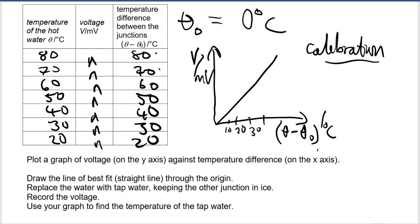You go horizontally until you meet the graph, you go down there, the graph will give you a temperature difference, theta minus theta naught. In this case, our theta naught was 0 degrees Celsius, which means this corresponds also to the temperature of the water. That's how you use your graph as the calibration curve. That's how you obtain values of temperature using a thermocouple. So the graph is used to find the temperature of the tap water. Any unknown temperature can be found using the calibration graph.